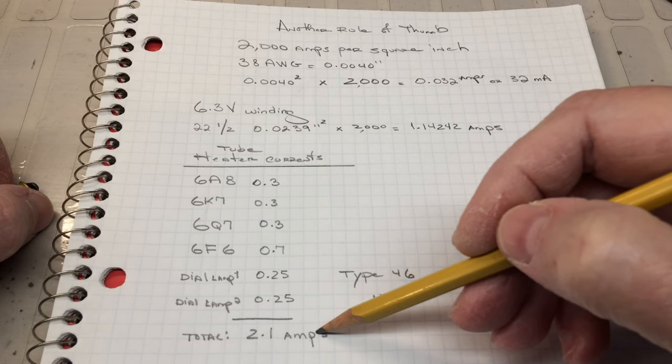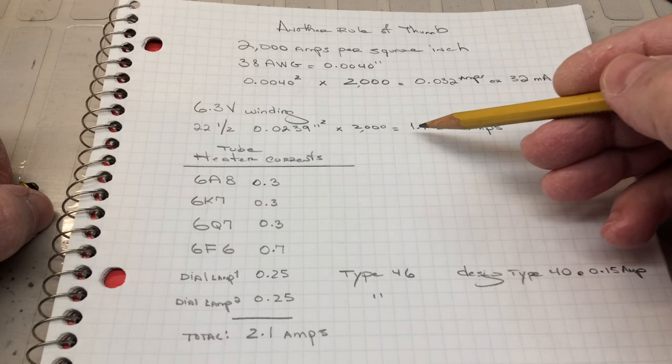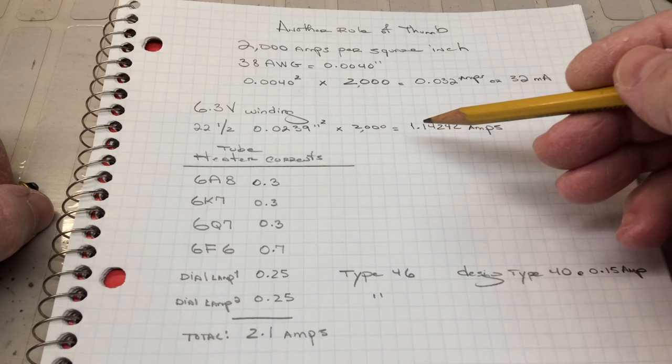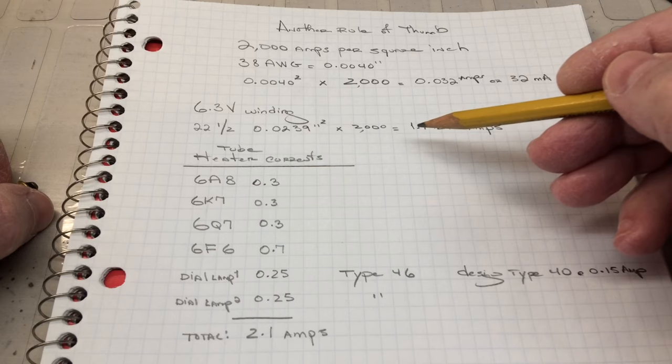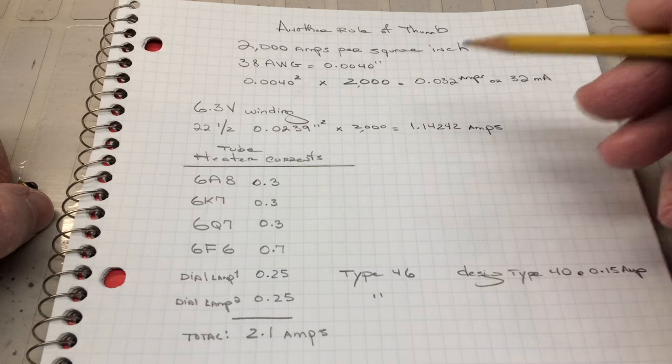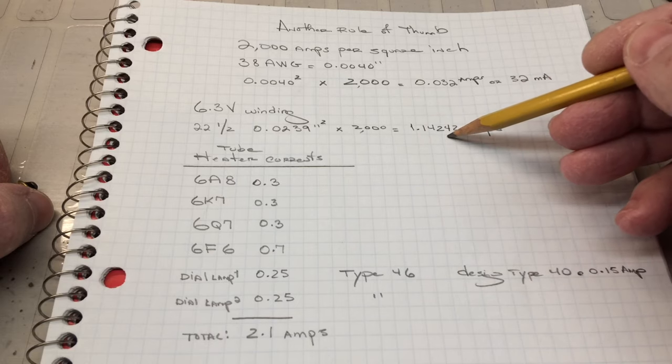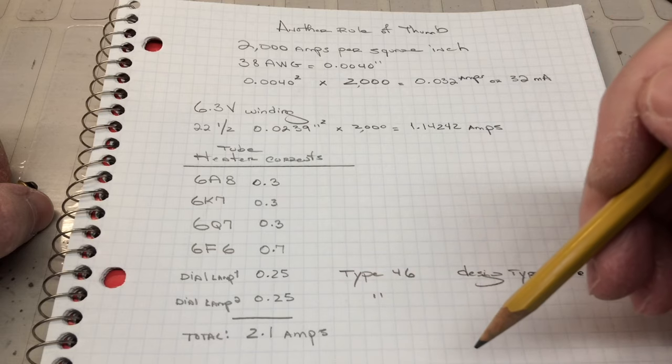So you can see we're really stressing the 6.3V winding based on the wire gauge it was used. This would generate a lot of heat, and probably one of the factors that the transformer failed would be my guess. Big difference here, 1.14, 2.1 amps.